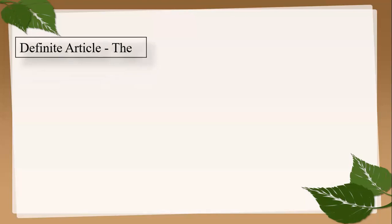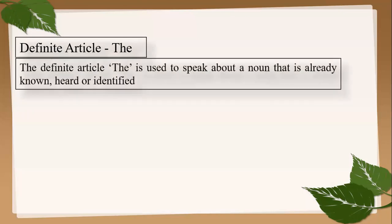Let's have a look at some information about the definite article 'the'. The definite article 'the' is used to speak about a noun that is already known, heard, or identified. So the definite article sits before those nouns which are known earlier, heard earlier, or identified.